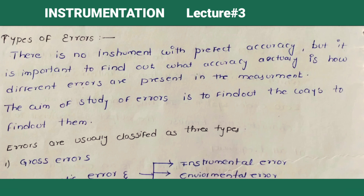We go for types of errors — what are the various types of errors present in any instrument. If you know what type of error is present in any instrument, we can reduce it, we can calibrate it. Finding what type of error it is, is important.